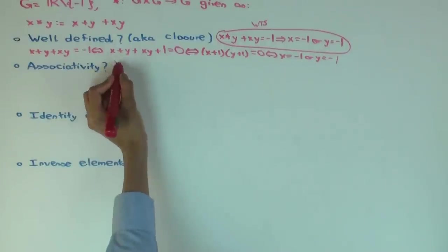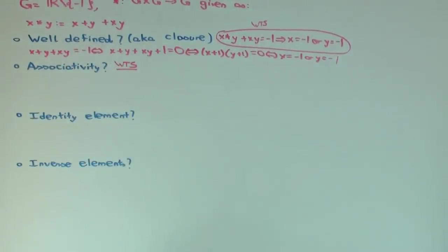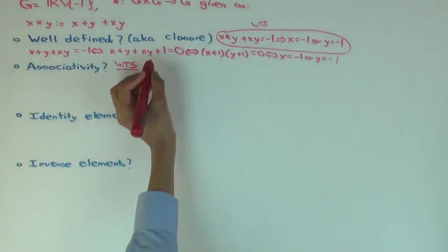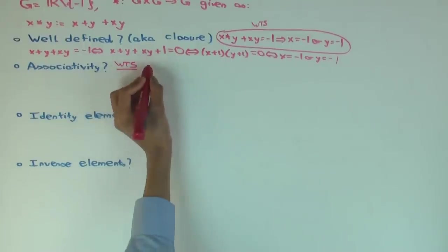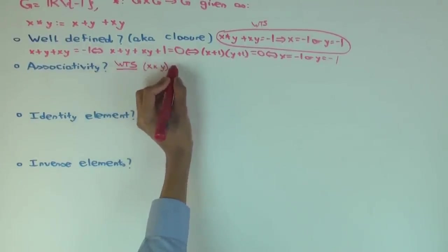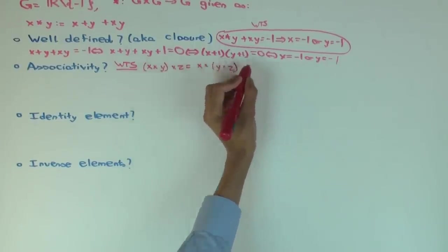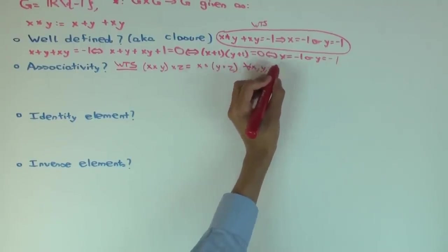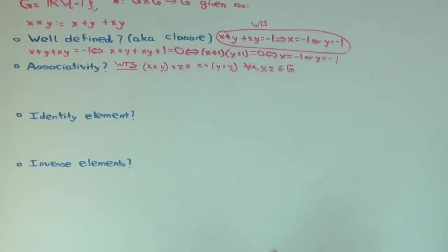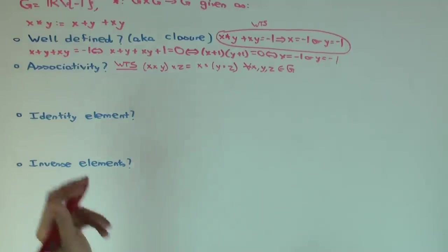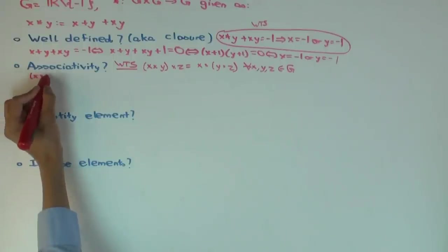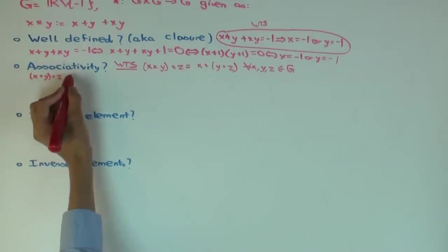So we want to show x star y star z equals x star y star z. Let's check for all x, y, and z. Let's take the left side and simplify it. So x star y star z is what? What's x star y?